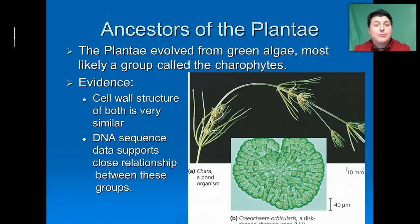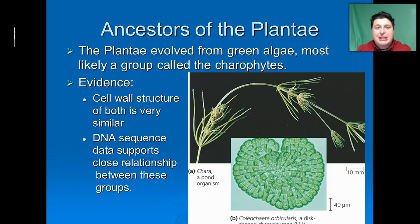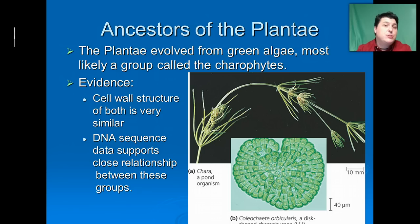The ancestor of the modern green plant is most likely single-celled algae. In particular, a group of algae that probably has very close ties to modern plants is a group called the charophytes. Scientists believe this because there is distinct evidence — for example, when we compare the cell walls of these single-celled algae to modern-day plants, they're very similar. In addition, the DNA of the charophytes and plants are very similar, indicating that they do have a close relationship.